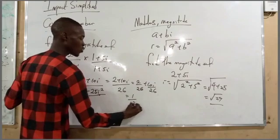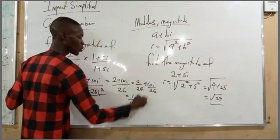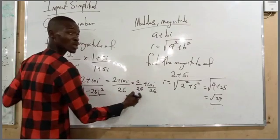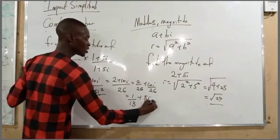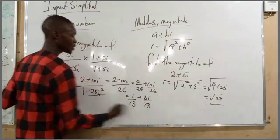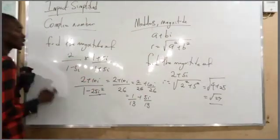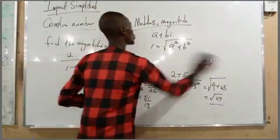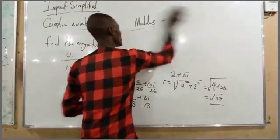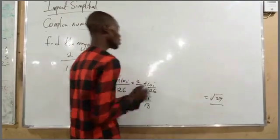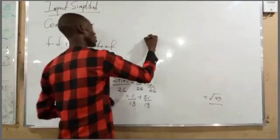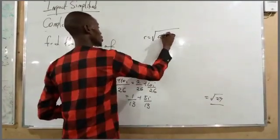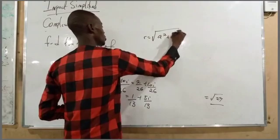Simplifying by dividing by 2 gives 1 over 13 plus 5i over 13. Now we find the magnitude of this simplified form using the formula square root of a squared plus b squared.